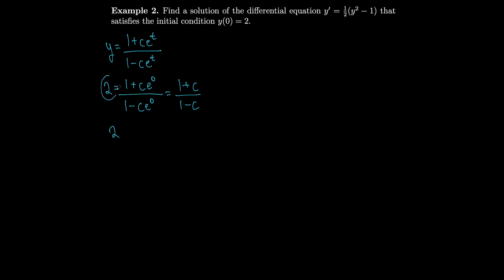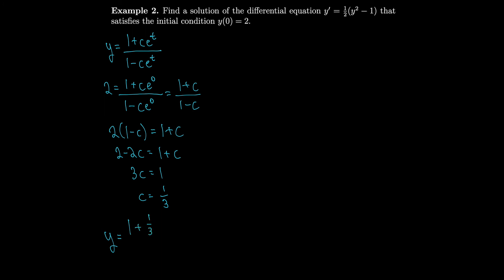Multiplying both sides by (1 − c), we get 2(1 − c) = 1 + c, which gives 2 − 2c = 1 + c, so 3c = 1, meaning c = 1/3. Our particular solution is y = (1 + (1/3)e^t) / (1 − (1/3)e^t), which we can multiply top and bottom by 3 to get y = (3 + e^t) / (3 − e^t).